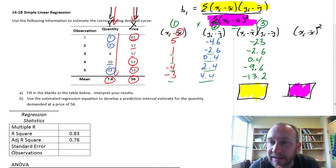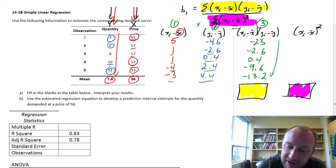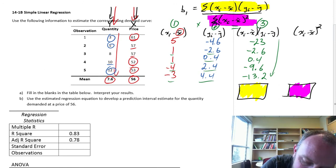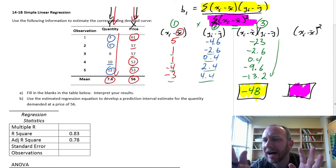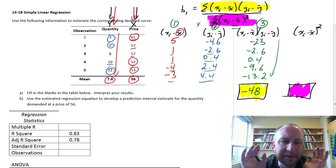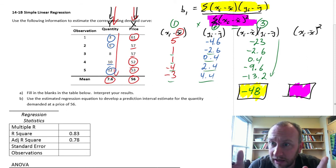To get that final number in the yellow box at the bottom, we add all of these up. So 23 plus minus 2.6, plus 0.4, and so forth. This adds up to minus 48. I might have some rounding error, one or two decimal places. I'm not too picky about some small deviation. Minus 48 is what I'll go with.